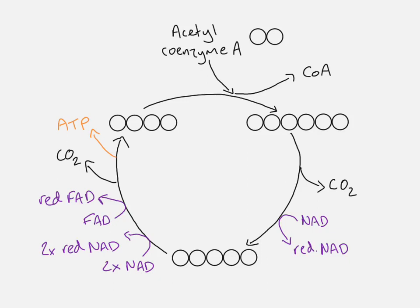You also need to know the names of some of these molecules. The four carbon molecule we start with is called oxaloacetate, and the six carbon molecule is called citrate. The steps going from six carbon to four carbon are actually a bit more complicated with several steps, but what's shown here in this simplified form is all you need to worry about.